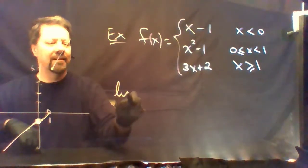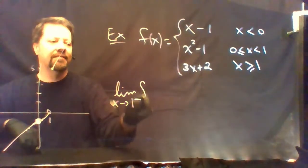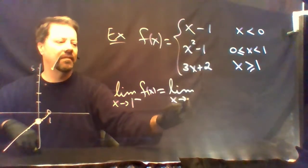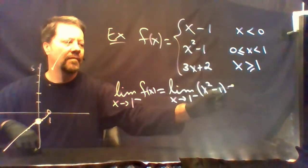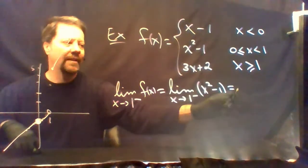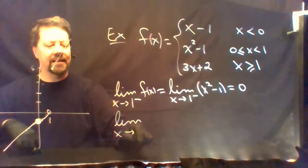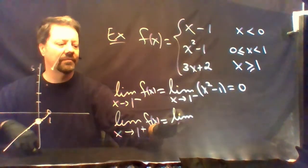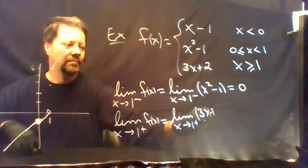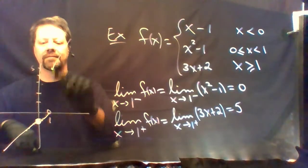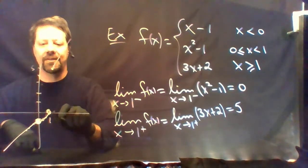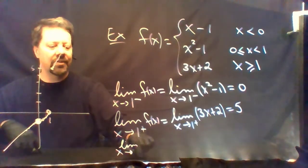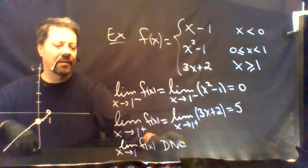Let's look at what happens at x equals 1. The limit as x goes to 1 from the left: to the left of 1 you use x squared minus 1, and being a polynomial you evaluate and get 0. The limit as x goes to 1 from the right: to the right of 1 you use 3x plus 2, and that gives you 5. As you approach 1 from the left you get a height of 0; as you approach 1 from the right you get a height of 5. Therefore the limit as x goes to 1 of f of x does not exist.